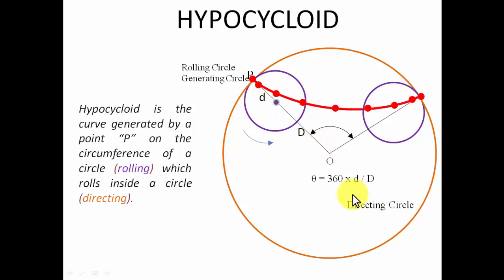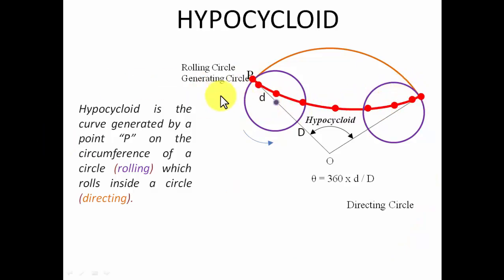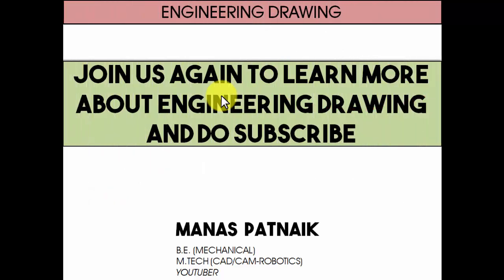The angle subtended in the hypocycloid case uses the same formula as the epicycloid: 360 multiplied by small d over capital D. That's exactly what you call a hypocycloid, and this is the portion you need to draw. If you have any doubts or queries, write them in the comment section below and I'll be happy to answer them. If you believe this video has added value to your knowledge of engineering drawing, do recommend this channel to your friends and classmates. This is Manas Patnaik signing off — take care, have a great day, and keep drawing.